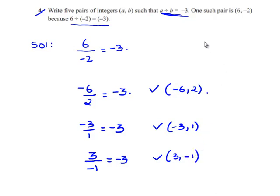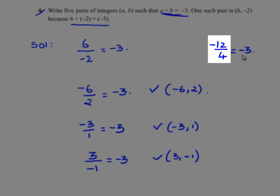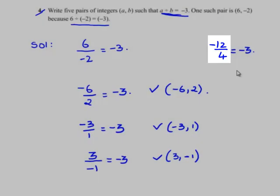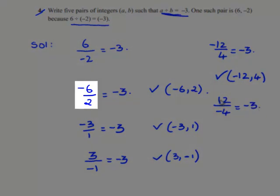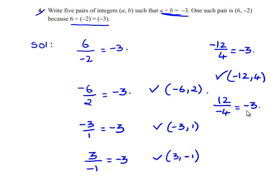Similarly, we can also take the example of negative 12 divided by 4, we get negative 3. The signs in the numerator and denominator are opposite, so we get a negative sign in the answer. When 12 is divided by negative 4 we also get negative 3, because the signs are opposite and 4 cancels 12 three times. Therefore the examples are negative 12 comma 4 and 12 comma minus 4.